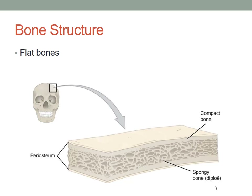Looking at flat bones and how they are structured — this example shows a piece of the skull. On the outside and the very inside, you have the periosteum covering both sides of the bone. And then you have compact bone under that, and in the middle you have spongy bone.